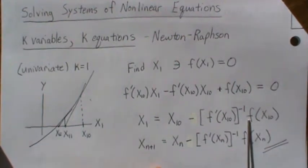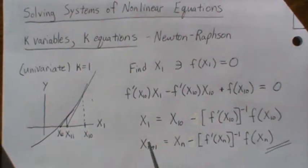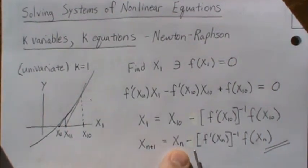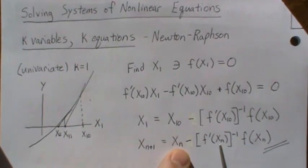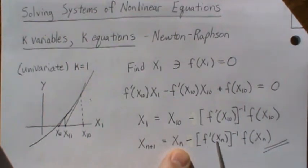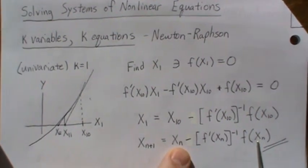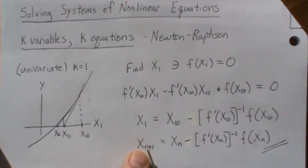Then in the literature, this is the equation they use — the previous data point minus the derivative evaluated at that previous data point, inverse (which in the univariate case means divide by), and then the function evaluated at that point. And then we get a new point.